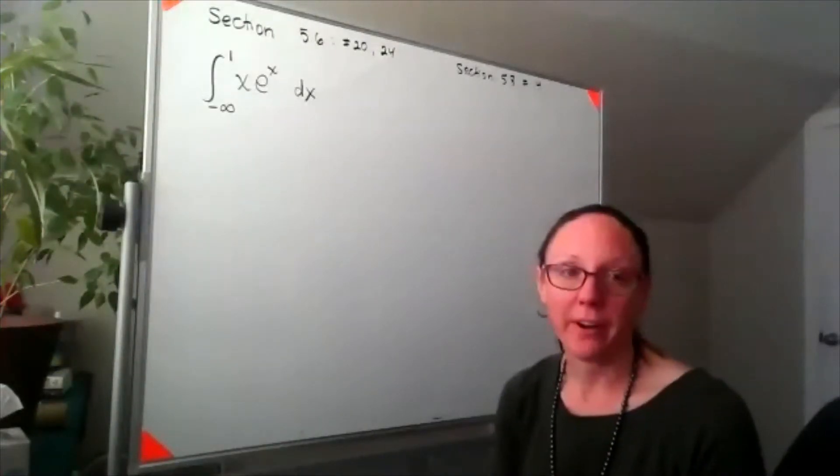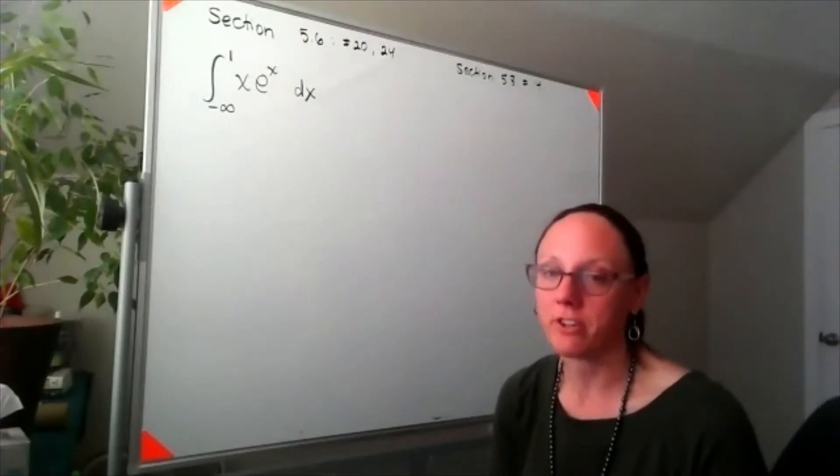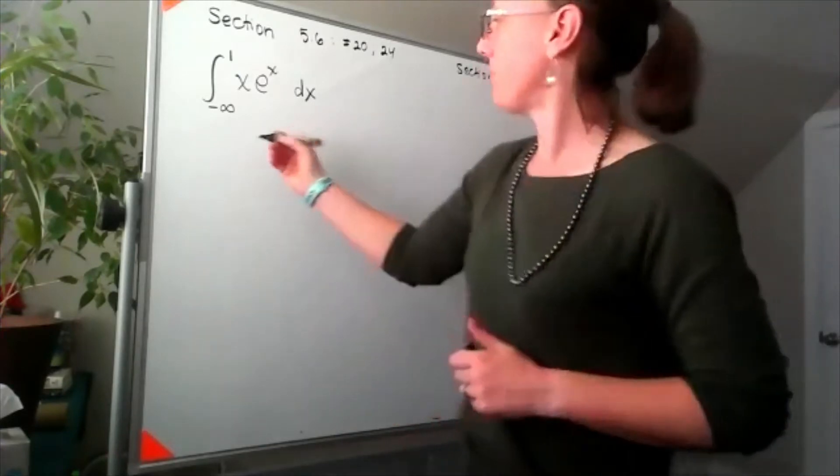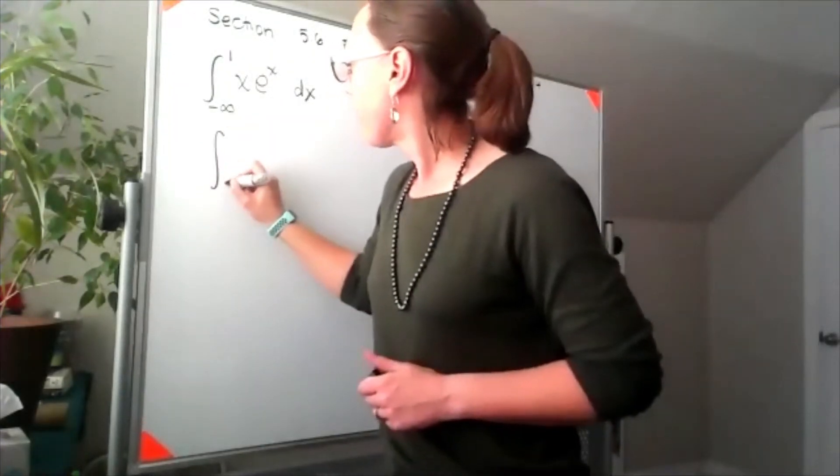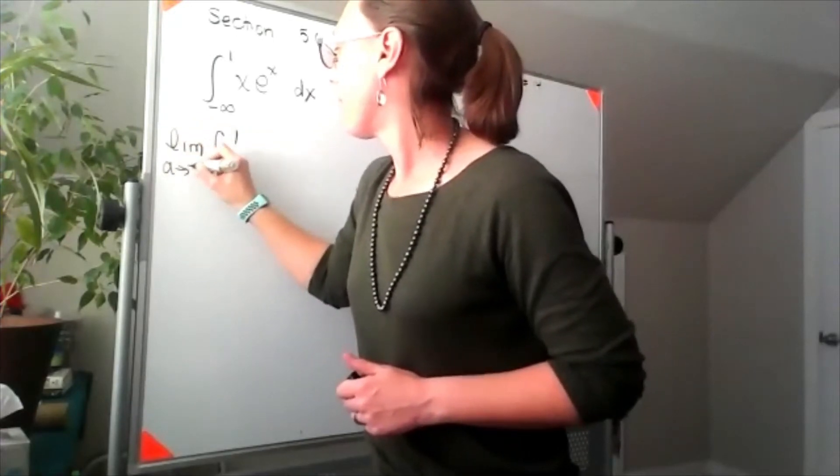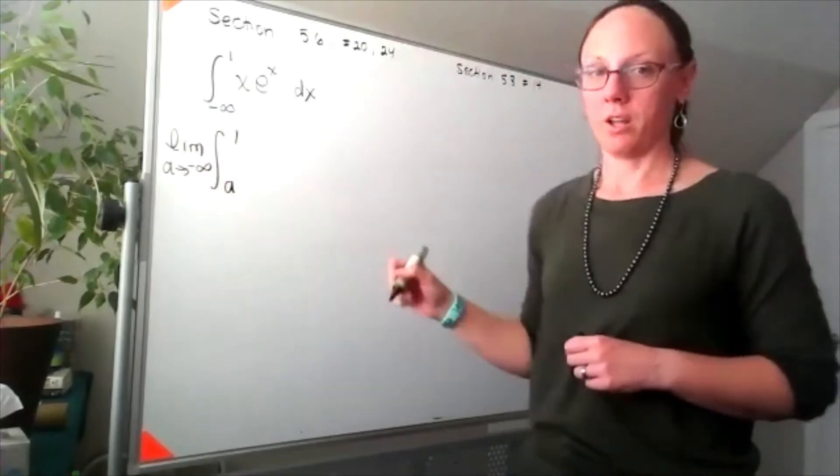So this is an improper integral because I have infinity in one of my bounds. The first thing I have to do is turn it back into a proper integral by swapping out my infinite bound for a limit.